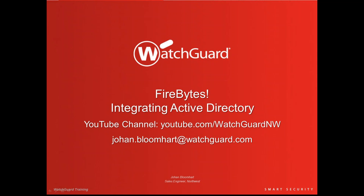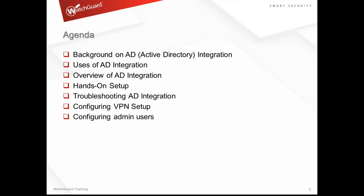Today we're going to be talking about integrating Active Directory. Interestingly enough, it comes up as a fairly common question as I'm going through talking about the power of Dimension and users start seeing the power of the SSO integration when they see usernames versus just IP addresses. A lot of times your IP address changes and it's not easy to correlate an IP address to a username. I came out of an infrastructure where we had about 3,000 IP addresses, so you can imagine memorizing all of that would have been a very difficult task.